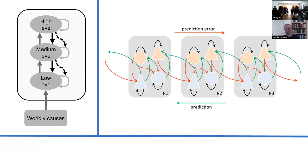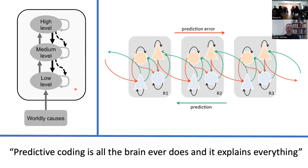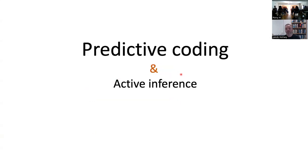If you've looked at this literature, it's full of images portraying the brain sitting inside a box trying to figure out what the worldly causes are by sending prediction errors up in response to predictions that go down. These are resolved with extra machinery around the precision weighting of predictions and prediction errors, which is an important part of predictive processing. A figure from one of Anil Seth's papers shows the same structure with three levels, representation units, and error units.